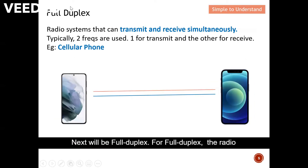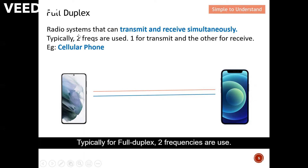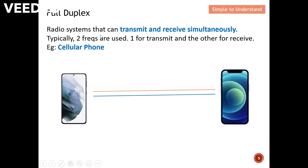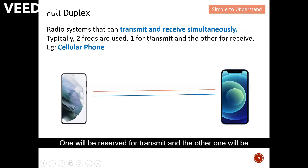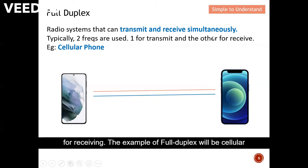Next is full duplex. For full duplex, the radio system can transmit and receive simultaneously. Typically, full duplex uses two frequencies — one reserved for transmitting and the other for receiving. An example of full duplex is the cellular phone.